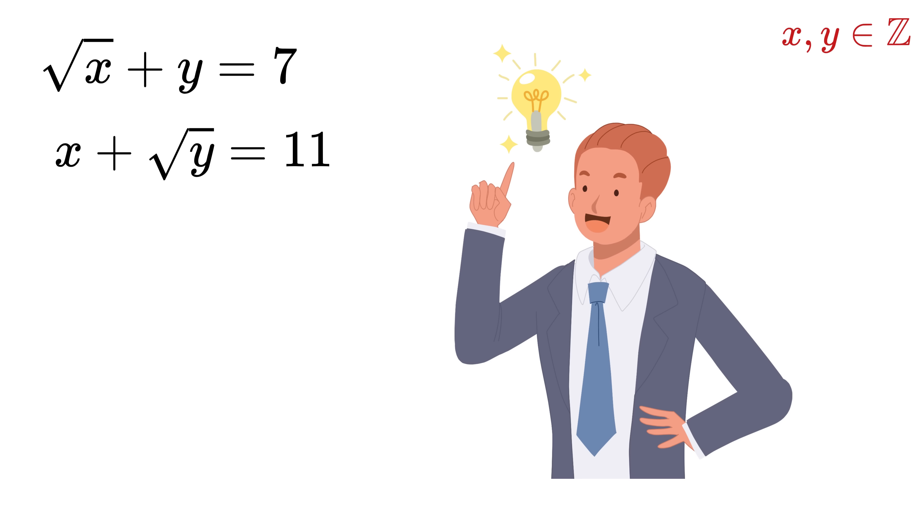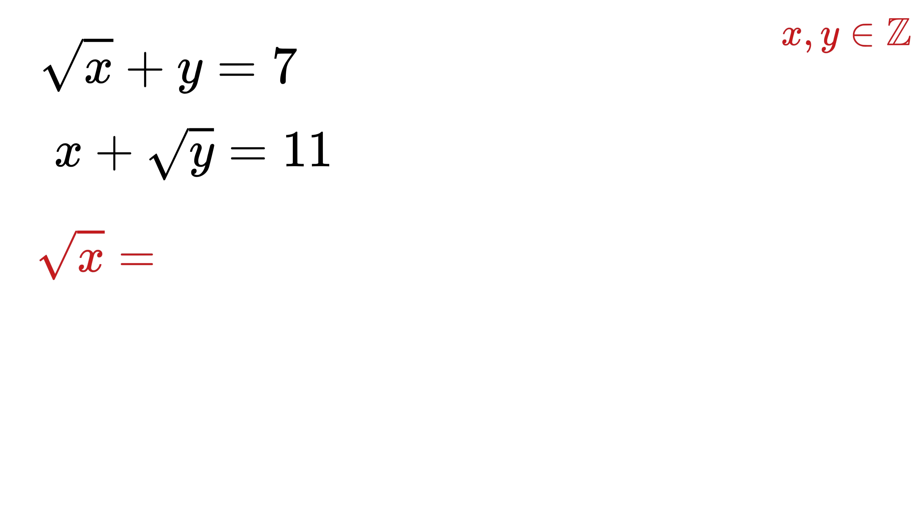So now we will use a clever trick here. Let us assume the square root of x as p and the square root of y as q, so x becomes p² and y becomes q². Now rewrite the original equations using them: we get p plus q² equals 7 and p² plus q equals 11.